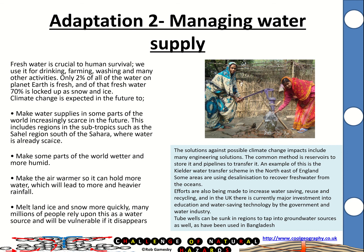We can also manage our water supply. Fresh water is vital for human survival — only 2% of the world's water is fresh, and a lot of that is locked up in snow and ice. Climate change will affect this because some parts of the world will become increasingly drier and some wetter. Strategies include engineering solutions such as storing water in reservoirs and piping it, like the Kielder Water scheme, using desalination plants (though very energy intensive), and installing tube wells and boreholes in poorer countries to tap into groundwater sources.